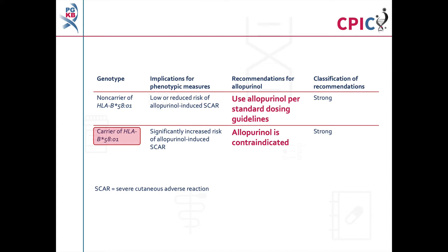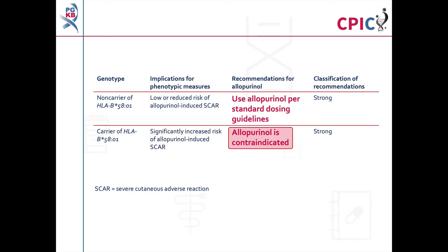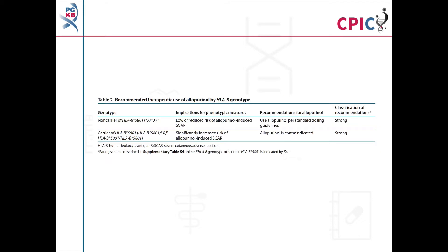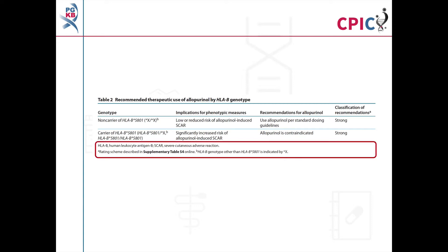Patients who carry one or two copies of the HLA-B*5801 allele will have a significantly increased risk of allopurinol-induced SCARs. Allopurinol is contraindicated in these patients. This is a strong recommendation. The dosing recommendations for allopurinol can be found in table 2 of the guideline. Detailed footnotes pertaining to the recommendations can be found at the bottom of this table.